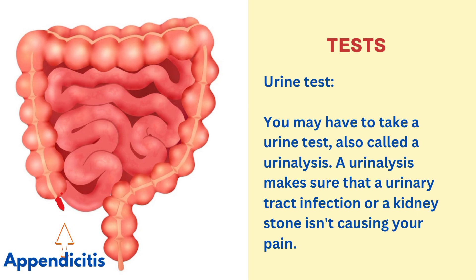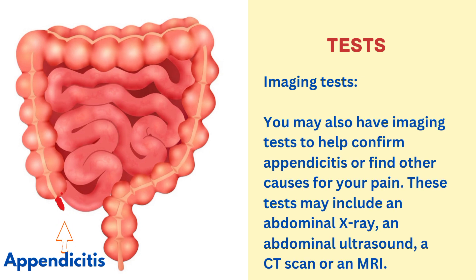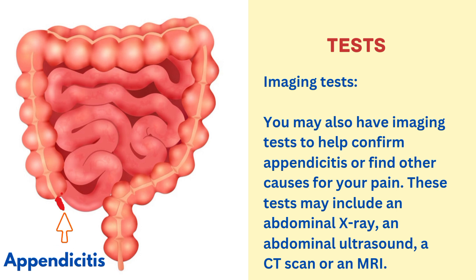A urinalysis helps make sure that a urinary tract infection or kidney stone is not causing your pain. Imaging tests may also be used to confirm appendicitis or find other causes of pain, including an abdominal X-ray, abdominal ultrasound, CT scan, or MRI.